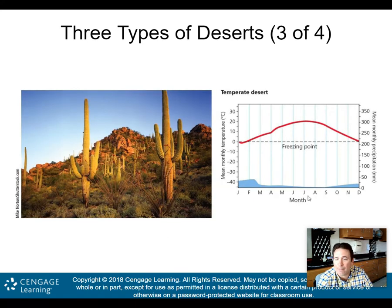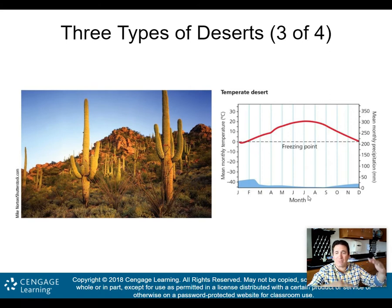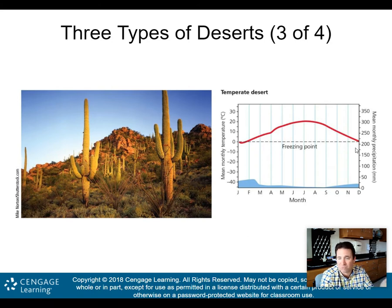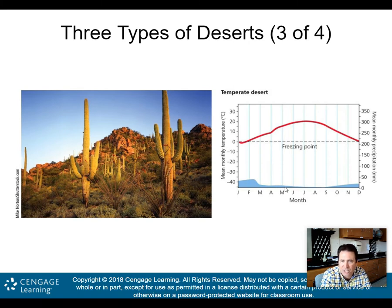The second type is the temperate desert, which will be in the middle latitudes — around 30 degrees north or 30 degrees south latitude. The temperature still gets warm, but in the winter, temperatures do get close to the freezing mark. It's definitely a little colder year-round compared to a tropical desert. Precipitation is still low, maybe a little higher than the tropical desert, with a little bit of precip during every month of the year.